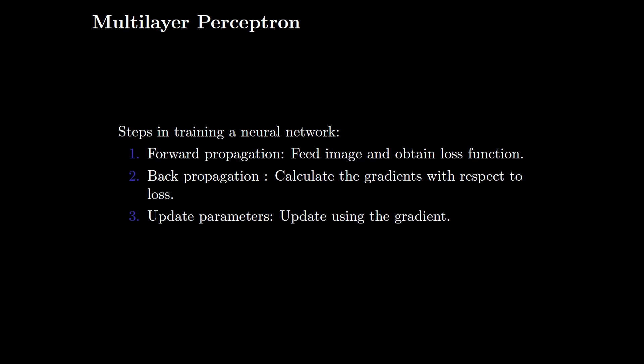The steps in training a neural network for a multilayer perceptron is as follows. First, during forward propagation, we feed the images to the network, obtain the label from the network, and compare it with the true label that we have. Using that, we get the loss function. In the backpropagation pass, we calculate the gradients with respect to the loss obtained, and then the last step is updating the parameters using the gradient. These 3 steps are repeated for all the images in the training dataset, and then the network is tested on the testing images.